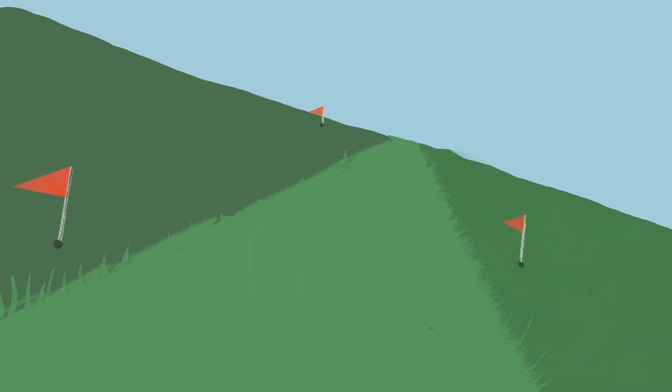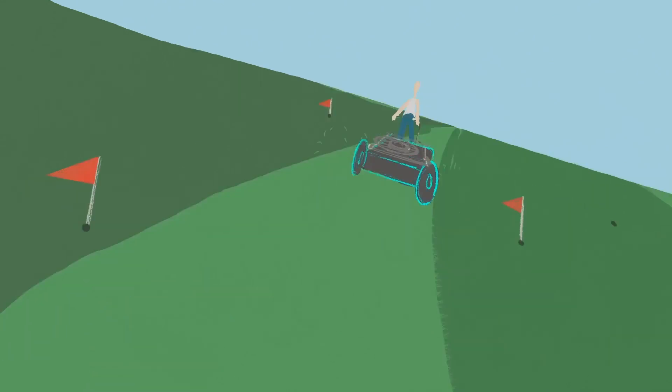To boost an existing lawn, pitch or course, mow the grass as short as you can, hollow tine, i.e. create a pin cushion effect using an appropriate piece of kit, or more simply, your garden fork.